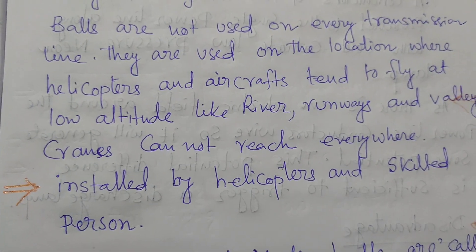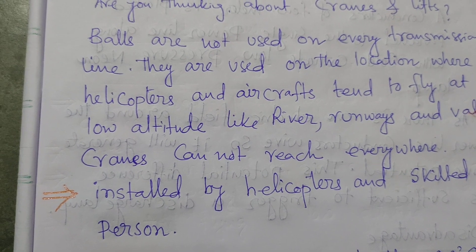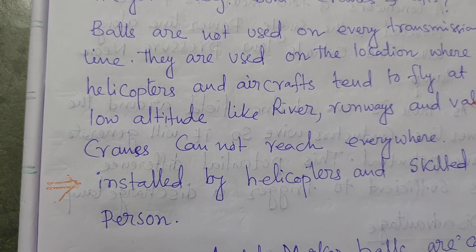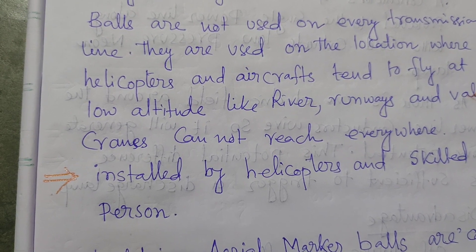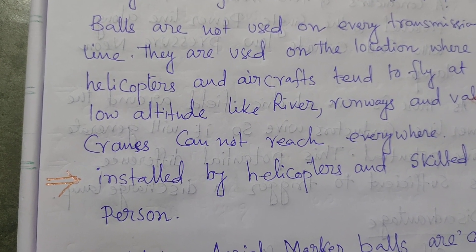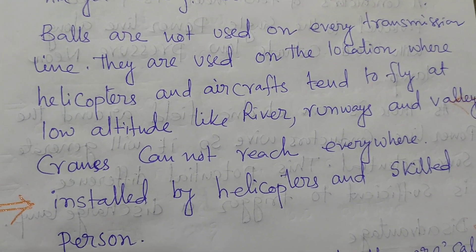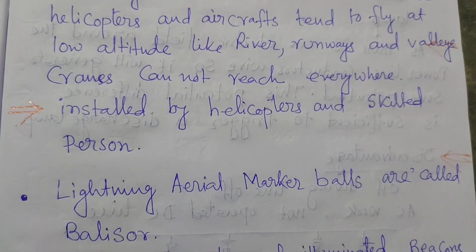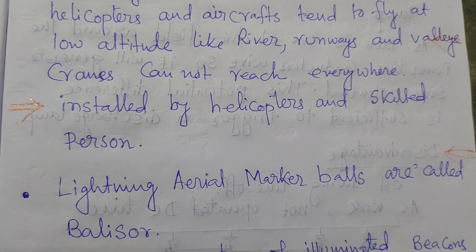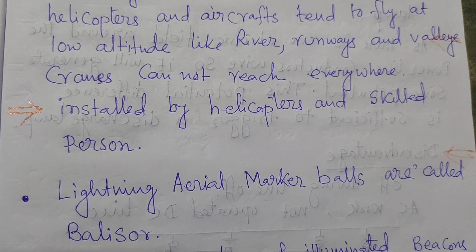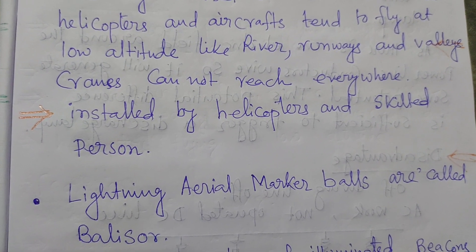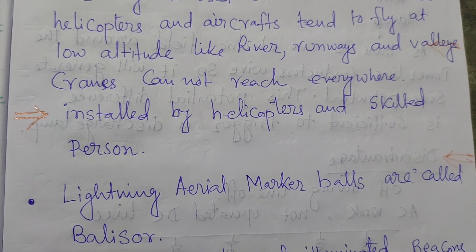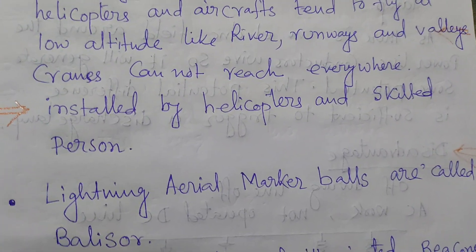The aerial ball is easily visible in the daytime in sunlight, but at night it cannot be seen by aircraft, so there may be danger and accidents without clear visibility. To solve this disadvantage of the aerial ball, we use a lighting aerial marker ball. It is called the 'belisher.' This belisher is installed inside the aerial ball or individually installed on the transmission line for better visibility at night when aircraft or helicopters are moving at low altitudes.